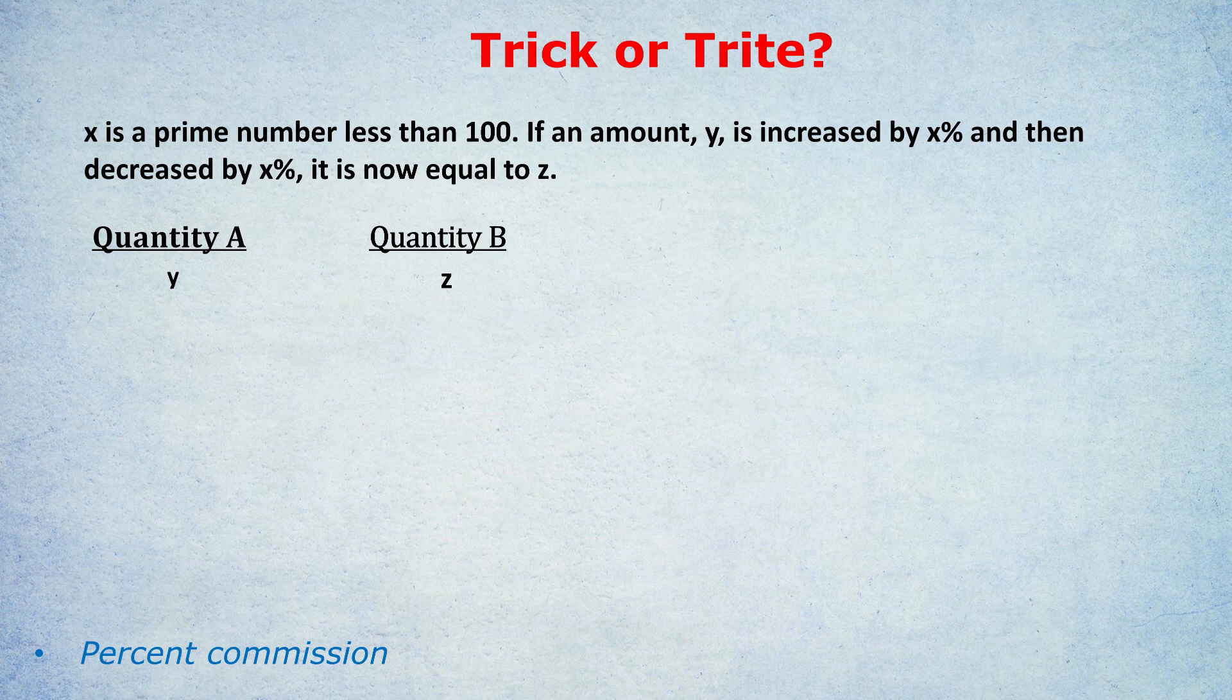It was just telling you that x was positive. The real trap was thinking that y equals z, whereas actually y is greater than z. You end up with a smaller amount. No need for algebra, by the way, or complex working out, as you might have seen.